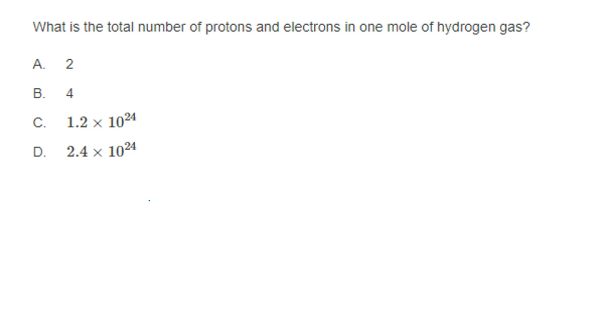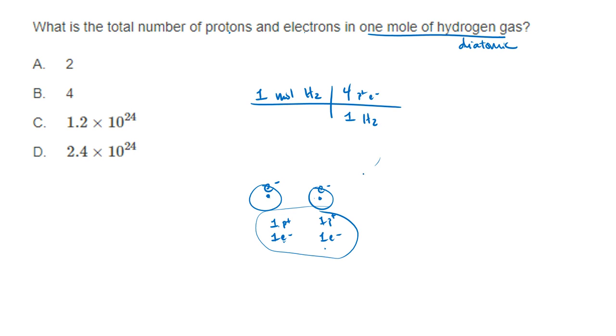One more and then we're going to call this done. So let's say that I have one mole of hydrogen gas. And I want to figure out the number of protons and electrons. Remember that hydrogen is one proton and one electron. So each hydrogen atom is going to have one proton and one electron. But I've got hydrogen gas and hydrogen gas is diatomic. And so I don't just have one hydrogen. I actually have two hydrogen atoms in each molecule of hydrogen gas, another proton and another electron. So all together, I have one, two, three, four, two protons, two electrons, four protons and electrons in every one hydrogen gas molecule.